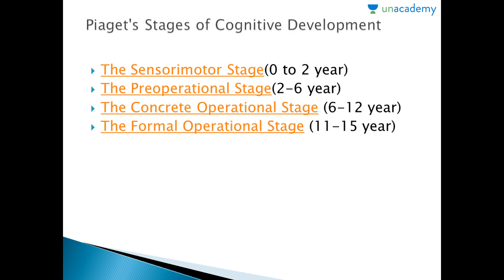Then comes the formal operational stage, which brings the development of reasoning capacity. The child, now a teenager, is able to think more abstractly, consider hypothetical situations, and imagine possibilities inherent in a problem. The child uses inductive or deductive logic to make decisions and solve problems, and has developed a vast imagination.